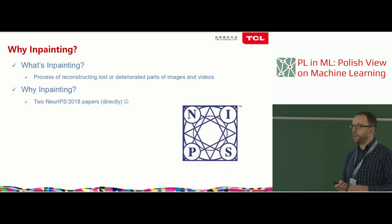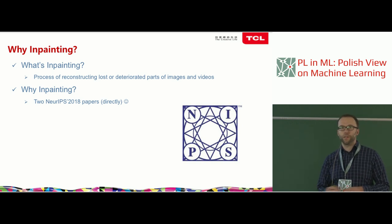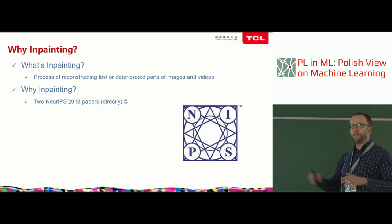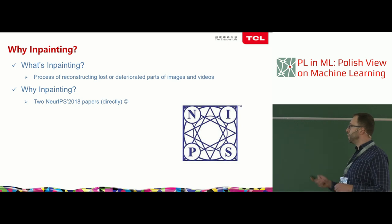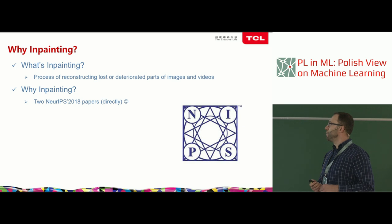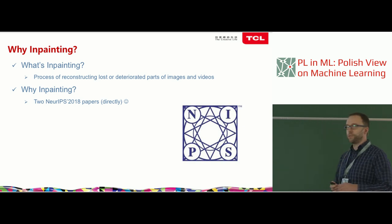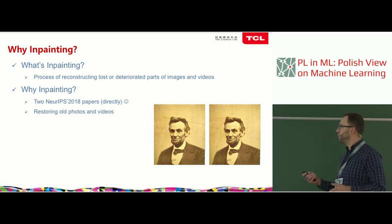Why is it interesting? The first answer is it was on NIPS, a recent top AI conference, so that's answer enough. But there are other reasons and applications. For example, it can be used to restore old photos or videos — like here, we have some defects on a photo, we put a mask on it, and try to restore what the photo should look like without the defect.